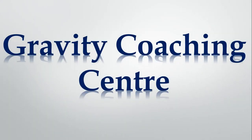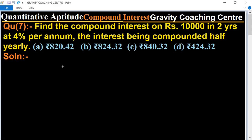Welcome to our channel Gravity Coaching Centre, Quantitative Aptitude, chapter Compound Interest. Question number 7: Find the compound interest on Rs. 10,000 in 2 years at 4% per annum, the interest being compounded half yearly.